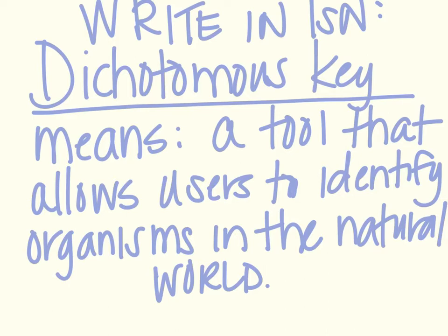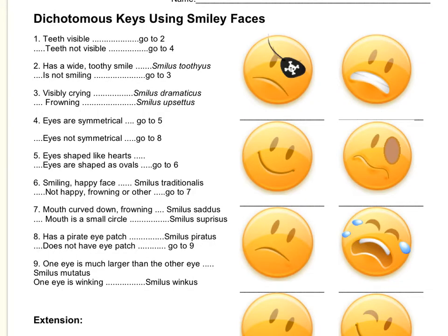Now I want you to take out your interactive notebook if it's not already open and in front of you. I want you to date it today's date, and then I want you to put in the definition of a dichotomous key. The definition is: a tool that allows users to identify organisms in the natural world. Take a minute to write that neatly in your interactive notebook. At this point you've watched the Amoeba Sisters video, done the paper, and now we've talked about what a dichotomous key means, what the word means, and what that means in nature.